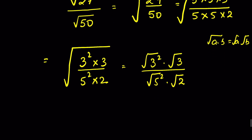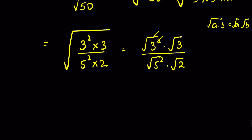Now we can remove the square root with the square. Why? Because when a is under square root, it means a is raised to the power of 1/2. So when we square it, the exponent is multiplied by 2, and this 2 and that 2 cancel out. Therefore, when there is a square, it removes the square root.